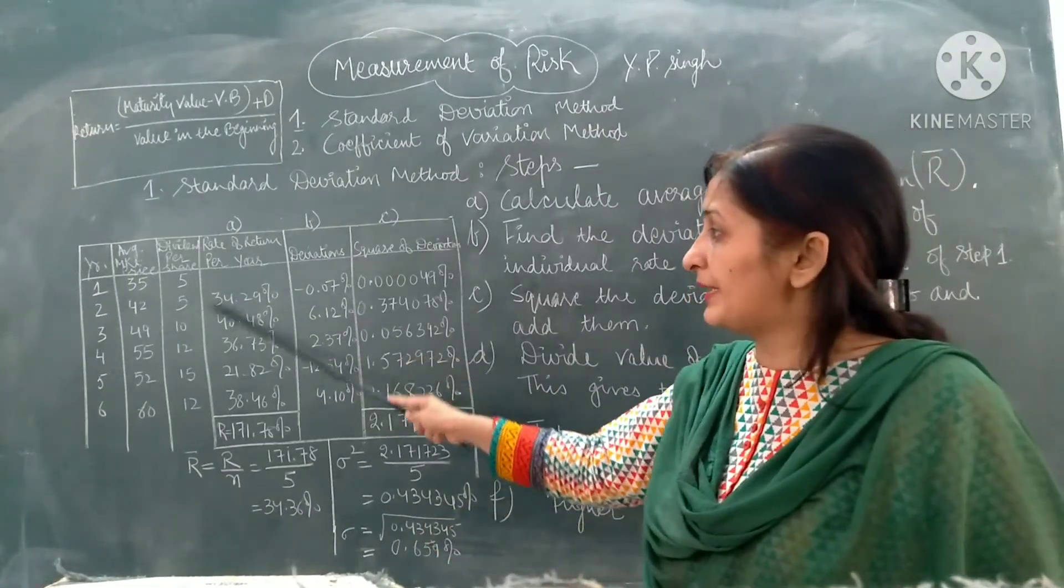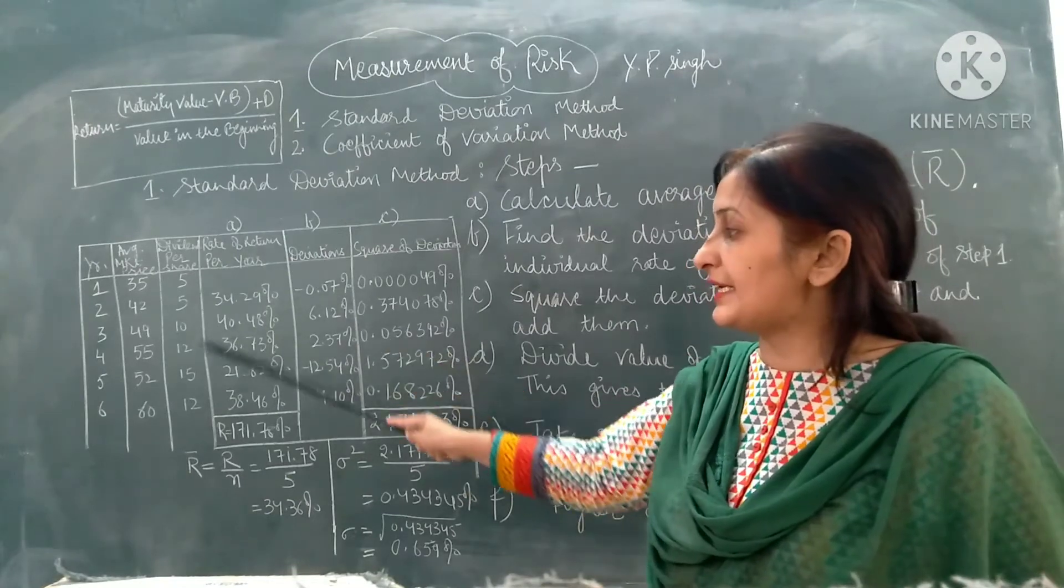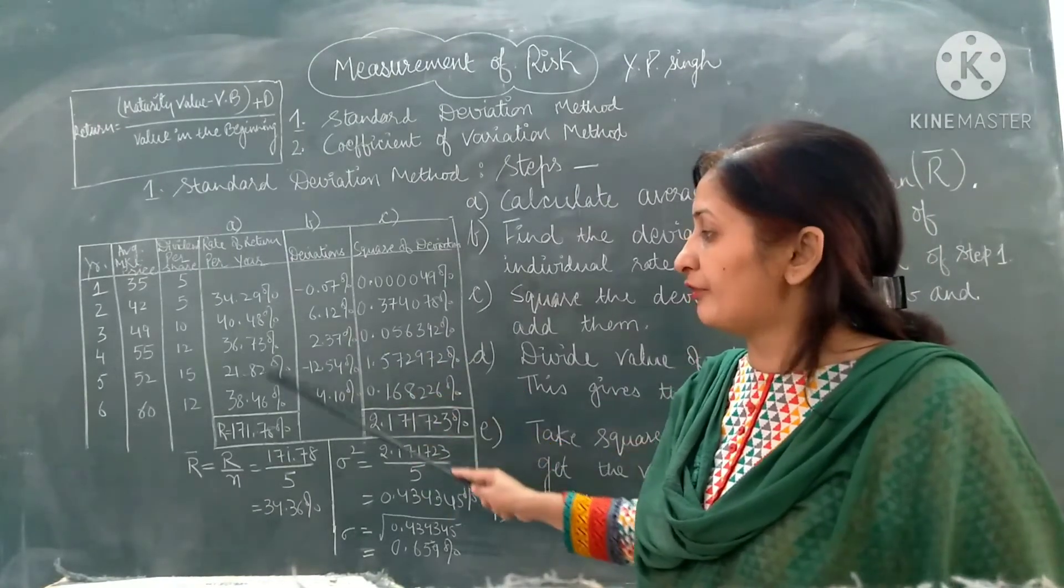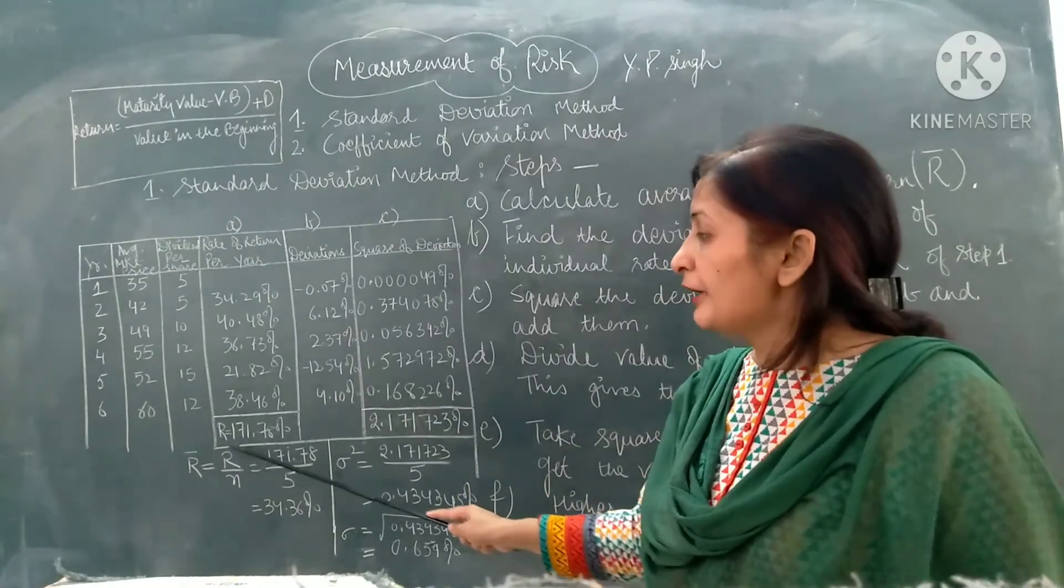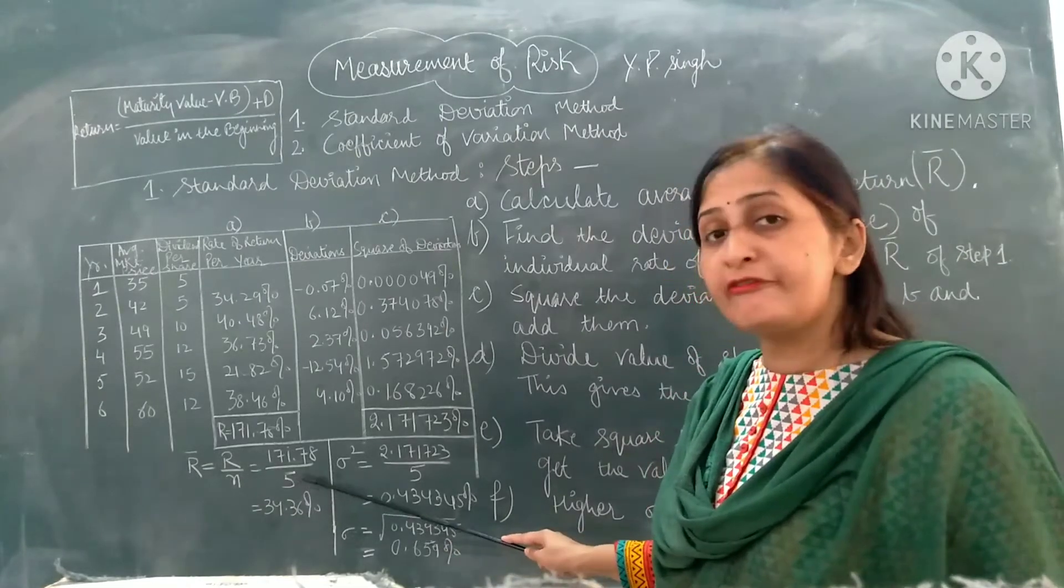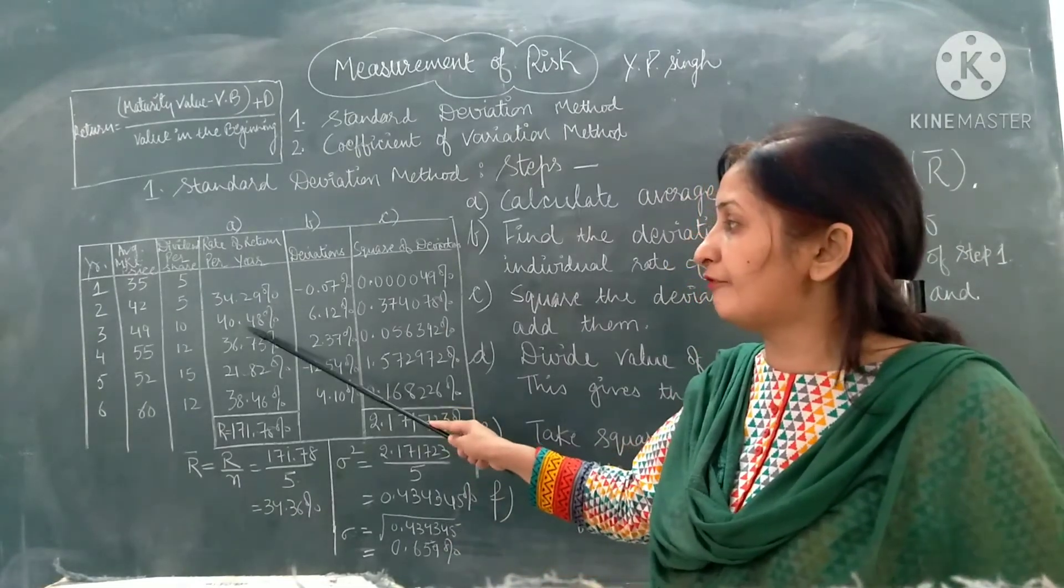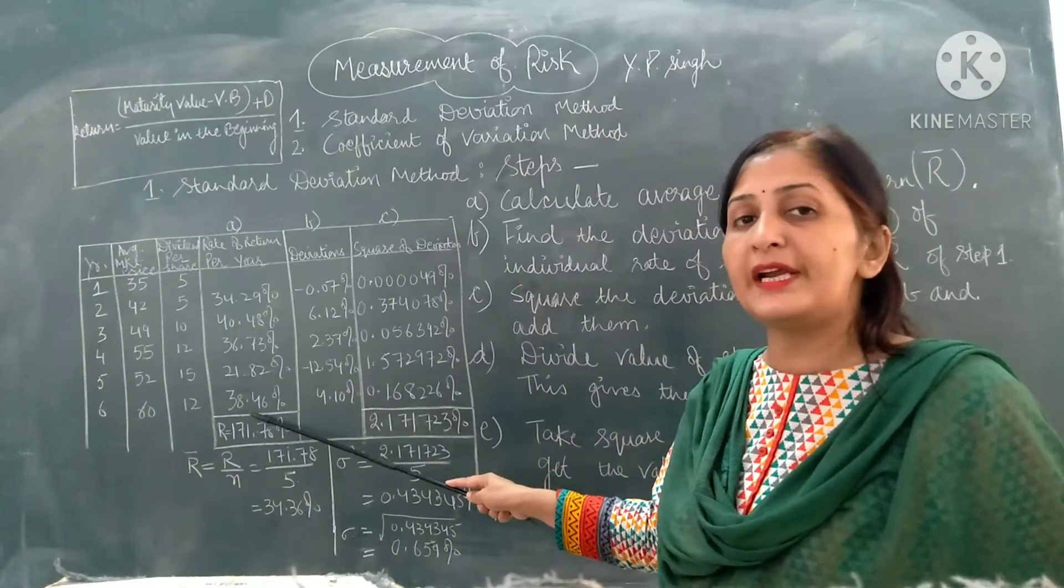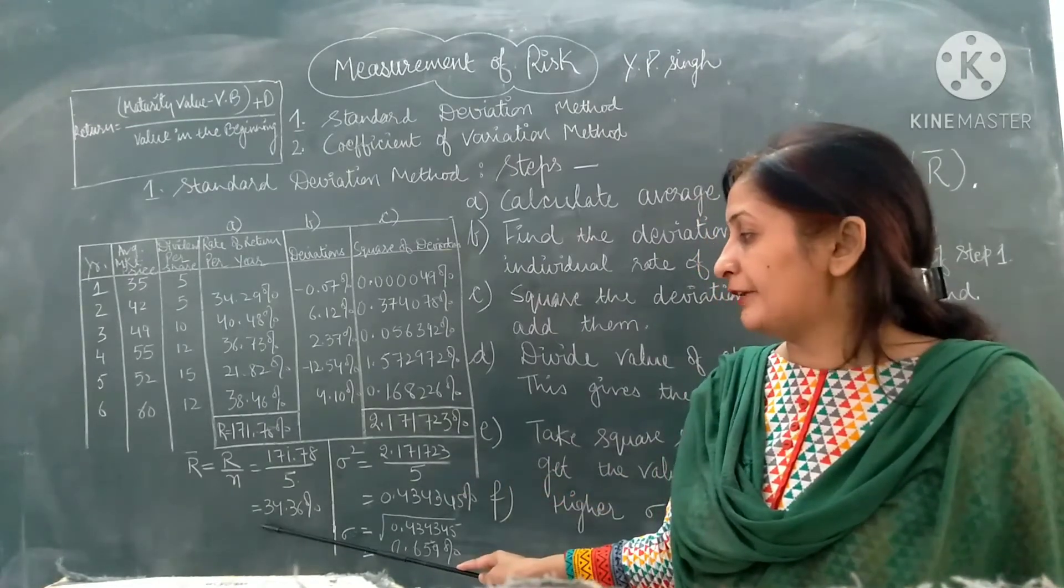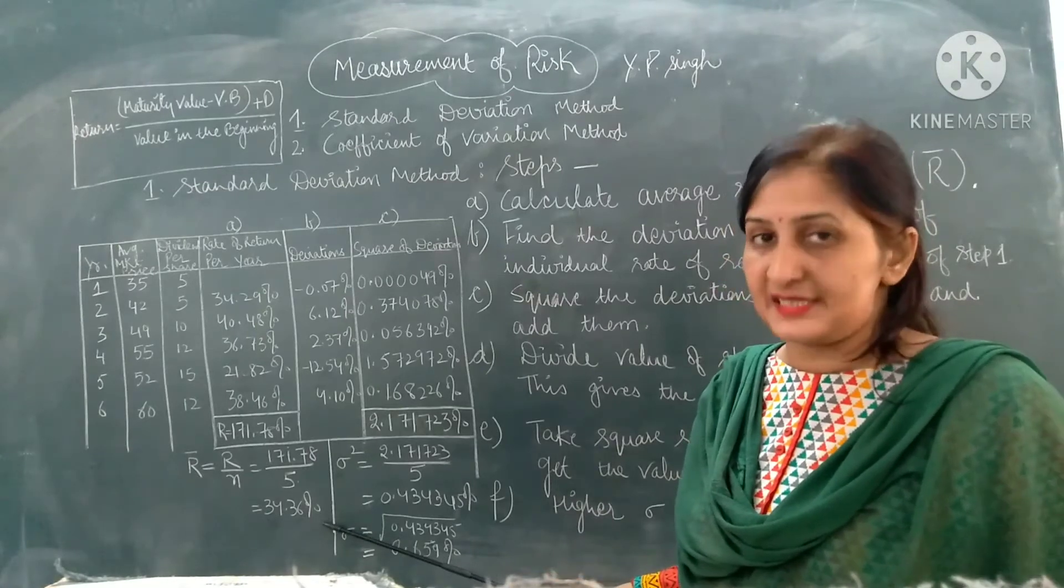For this value, we get the average return as mentioned in step 1. This particular column represents the value of step 1. We find out the average rate of return by dividing total return by number of years. We have total returns for 5 years, and our average return is 34.36 percent.